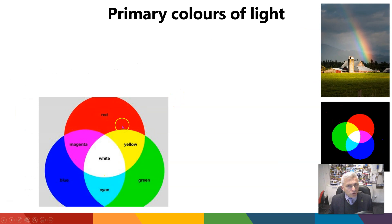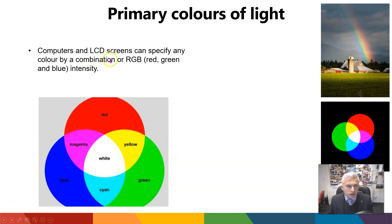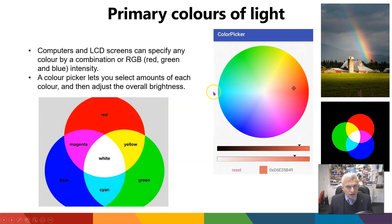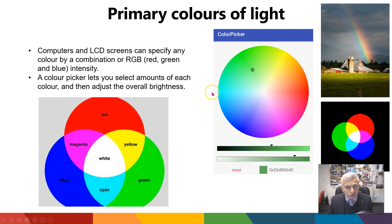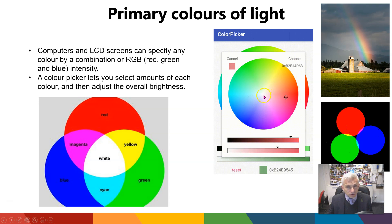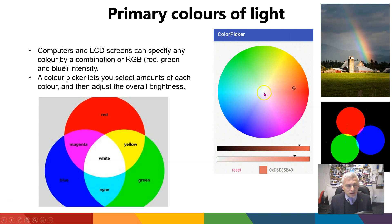This is called primary colour mixing. Computers and LCD screens can specify any colour by a combination of red, green and blue intensity. You might have seen things like this colour picker, from an app on a phone where you would choose a colour — we've got green, red and blue. Moving towards the middle would be brighter, so more and more white; you can change the brightness.